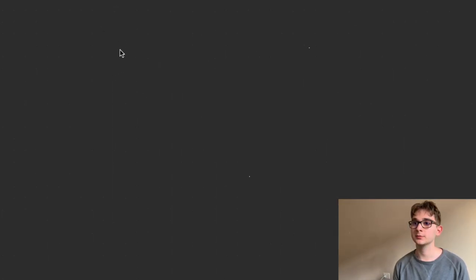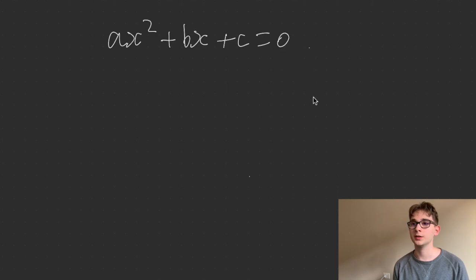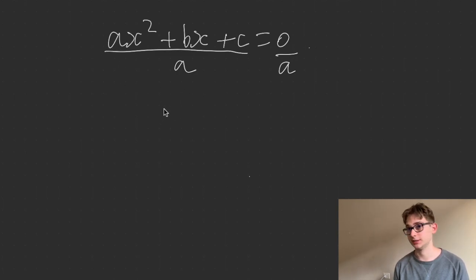Then see what we can do to prove the quadratic formula based off the standard form of a quadratic. So when you're completing the square, you want to get rid of this leading coefficient, which is ax squared. That's all you want to do. You want to divide both sides by a.